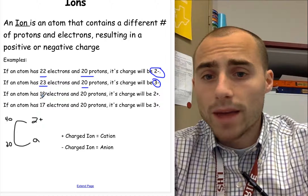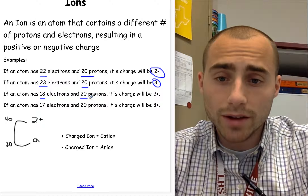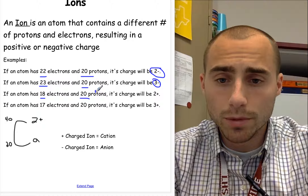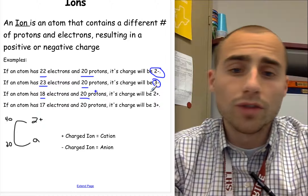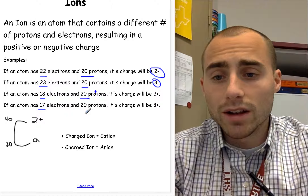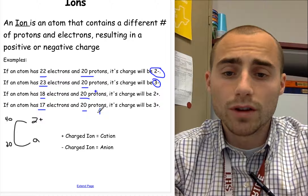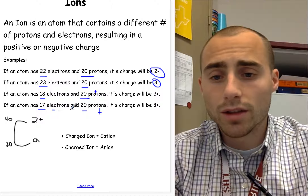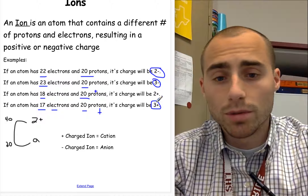If an atom has 18 electrons and 20 protons, now it has two more protons, which are positively charged, therefore its charge will be two plus. If an atom has 17 electrons and 20 protons, it's positively charged protons versus negatively charged electrons — it's got three more positive than negative, so its charge will be three plus.